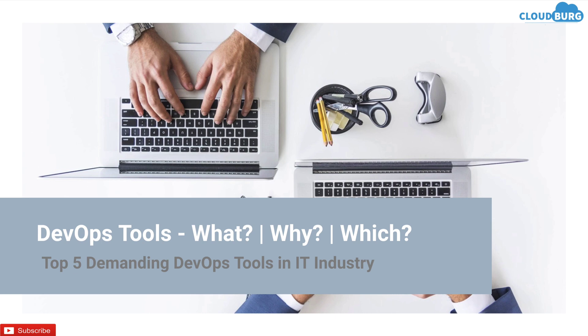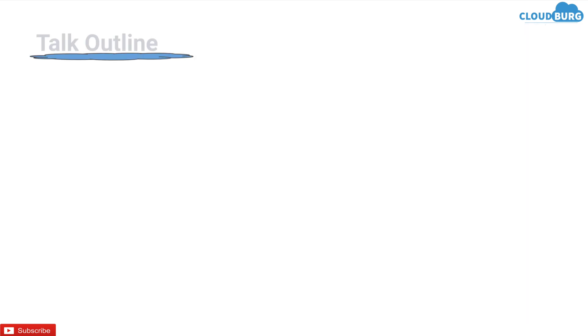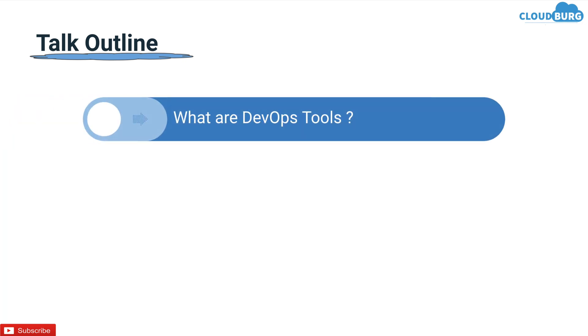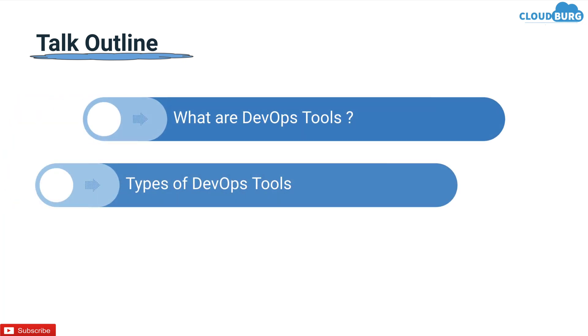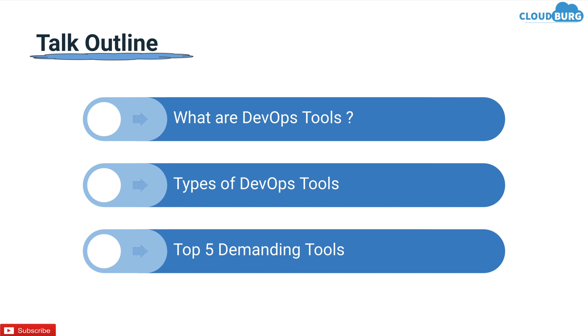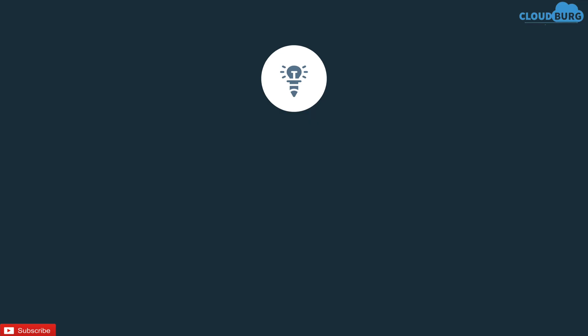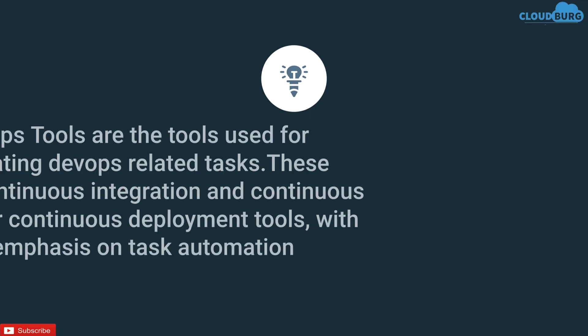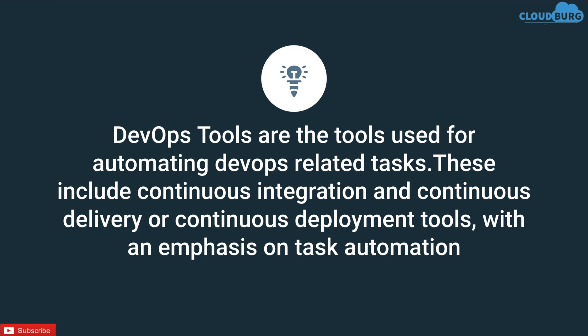It is very strange that there is no such video on YouTube regarding types of tools. Let's start with the outline of today's talk. First of all, we are going to see what are DevOps tools, followed by types and top 5 demanding DevOps tools. DevOps tools are the tools used for automating DevOps-related stuff. These include continuous integration and continuous delivery or continuous deployment tools, with an emphasis on task automation.